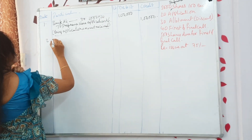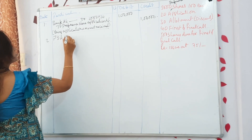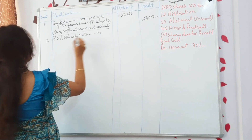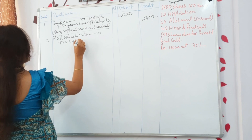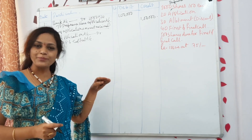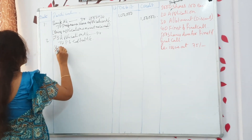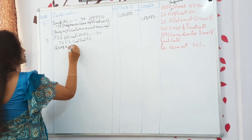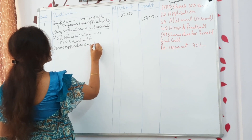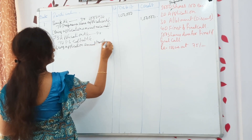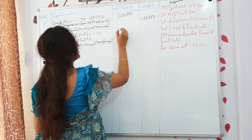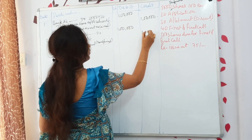The second journal: Preference Share Application Account Dr to Preference Share Capital Account. Being application amount transferred. The amount is ₹1,00,000 on both sides.